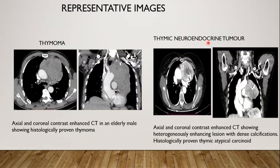Thymic neuroendocrine tumor: the most common is the atypical carcinoid. On contrast-enhanced CT, they show heterogeneous enhancement with areas of calcification, mediastinal invasion, and distant metastasis.